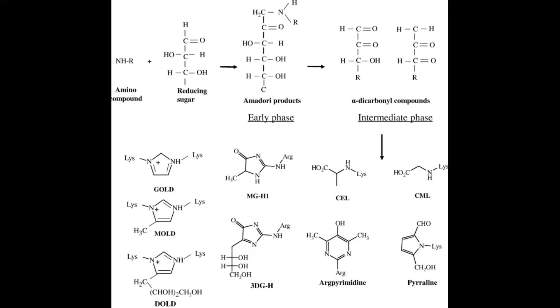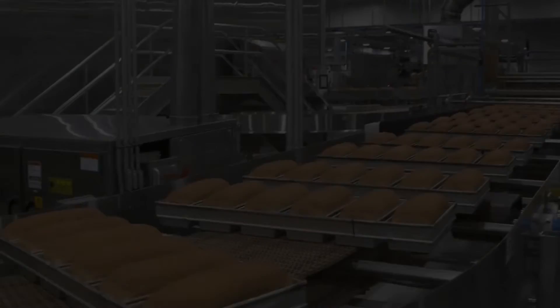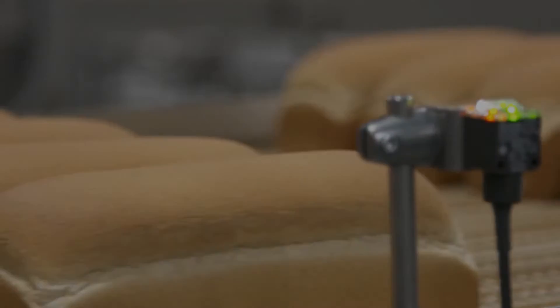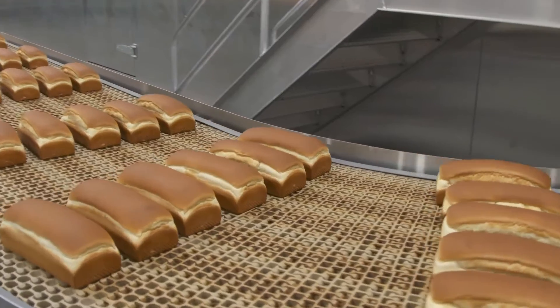For Maillard browning to occur, the following must be present: a compound with an amino group — typically an amino acid or protein — and a reducing sugar such as glucose. The reaction can be followed by observing color formation at 420 or 490 nanometers in a spectrophotometer or by following CO₂ production. General effects include flavor, color, odor changes, a decline in protein quality, and a decline in digestibility and amino acid availability. Water activity of 0.6 to 0.7 and higher temperatures favor the reaction.